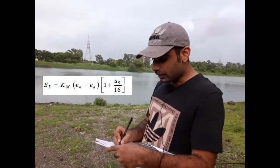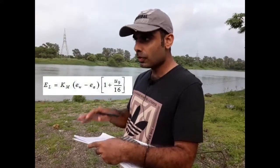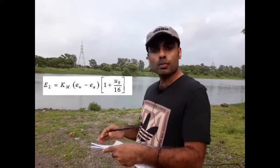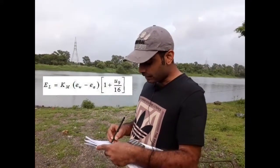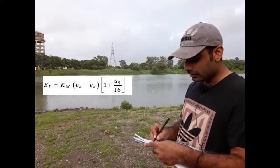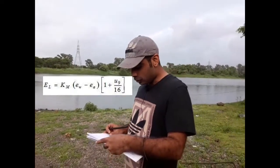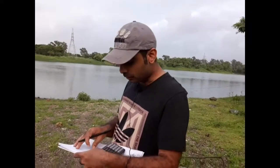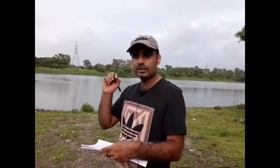Now, the value of the constant K for most lakes is taken as 0.36. Ew is 20.96, Ea is 12.57, and U9 wind velocity was 10 kilometers per hour. So, the value of lake evaporation using the Mears formula was 4.90 millimeters yesterday.